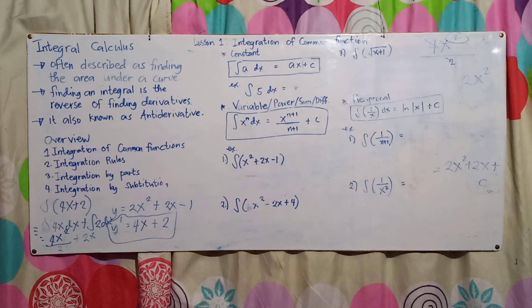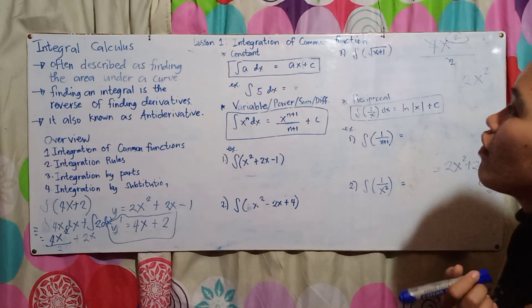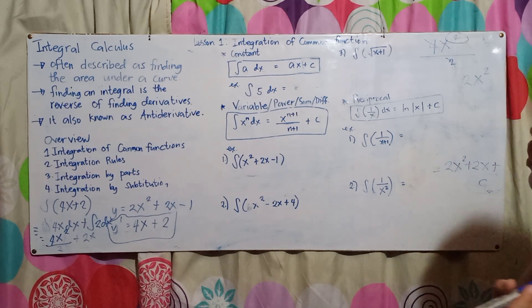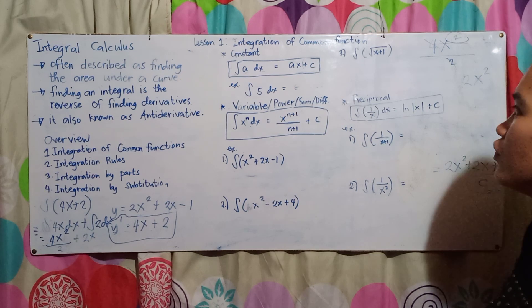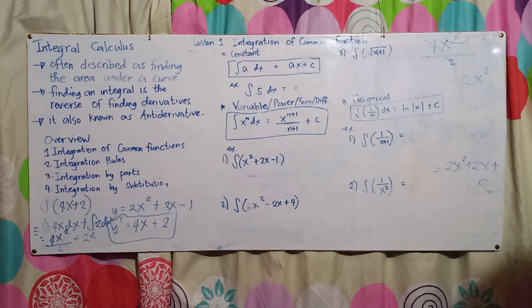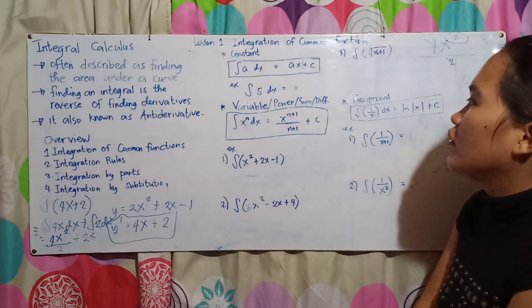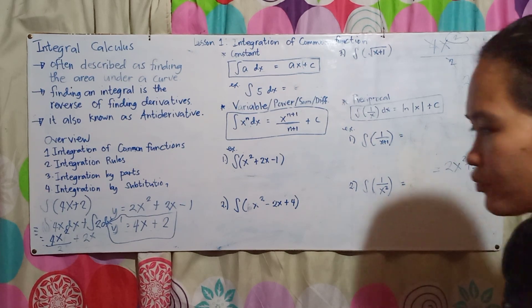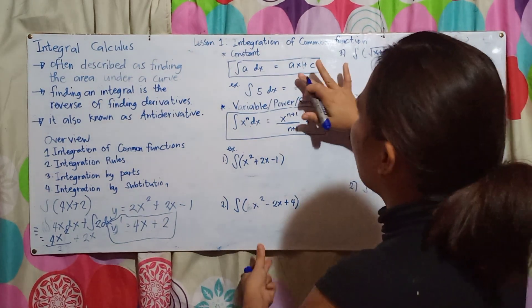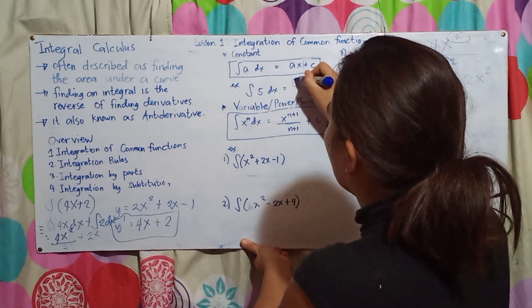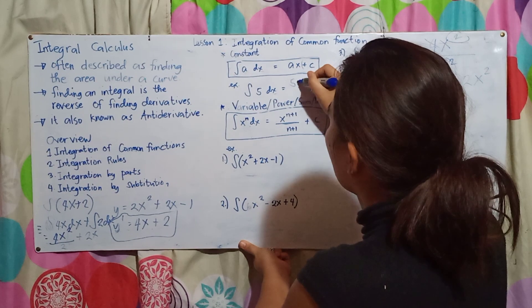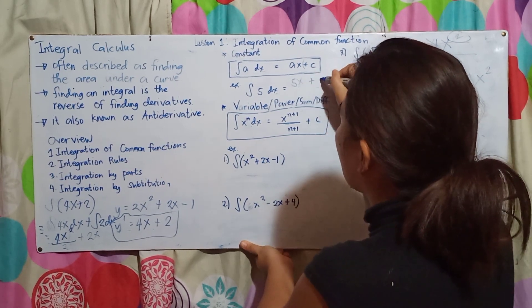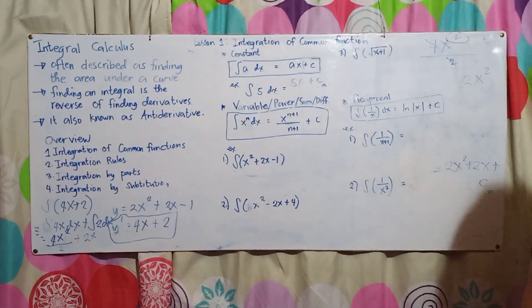Let's proceed to our discussion on the integration of common functions. First is the constant function: the integration of a constant 'a' dx equals ax + C. For example, the integration of 5 dx = 5x + C. Always add plus C at the end.